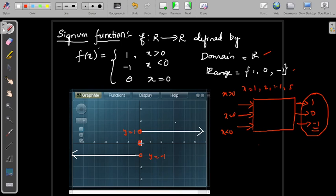So this is all about signum function, which tells that if the input is positive, output is 1. If the input is negative, output is minus 1. If the input is 0, output is 0.